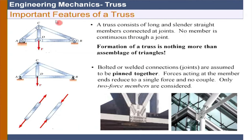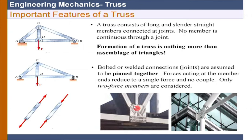Remember that a truss consists of long and slender straight members connected at joints. We call A, B, C, D as joints - all the members are connected to the joints. We can simply say that a truss is nothing more than an assembly of triangles. In actual practice, the connections are made using a gusset plate, and all the members come together and are either bolted or riveted.